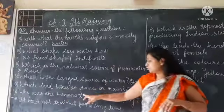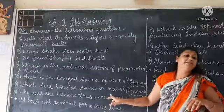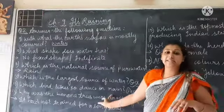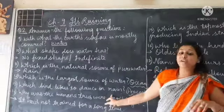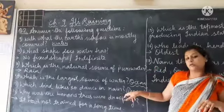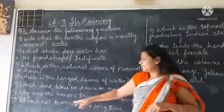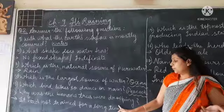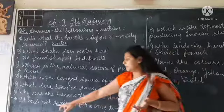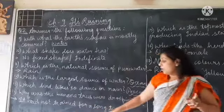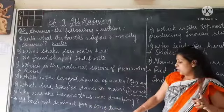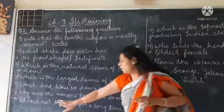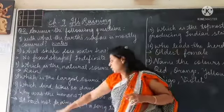Question 13: Which bird likes to dance in the rain? Number 14: Why was the banana tree drooping? Because it had not rained for a long time.